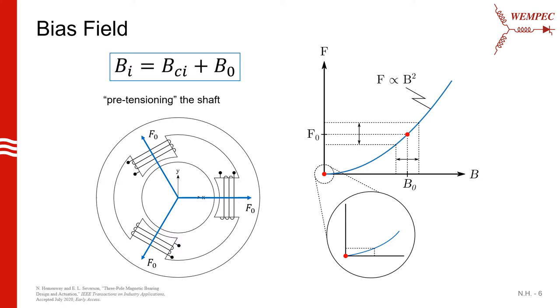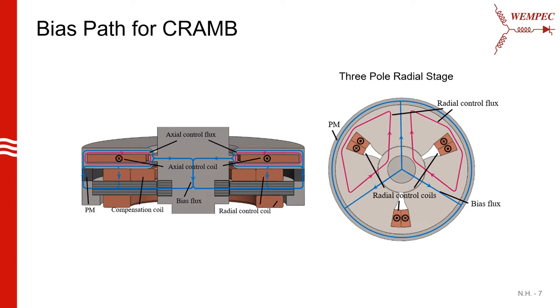If, however, we bias our bearing such that we're sitting higher up on this curve, we don't have to change our field as much to get a much larger change in the force output, which is great from a control standpoint. It turns out that adding a bias field can actually increase the force rating of the bearing as well, which we'll show shortly.